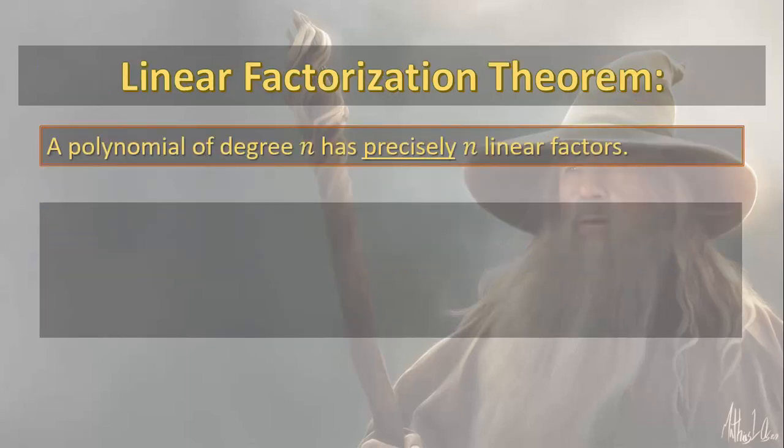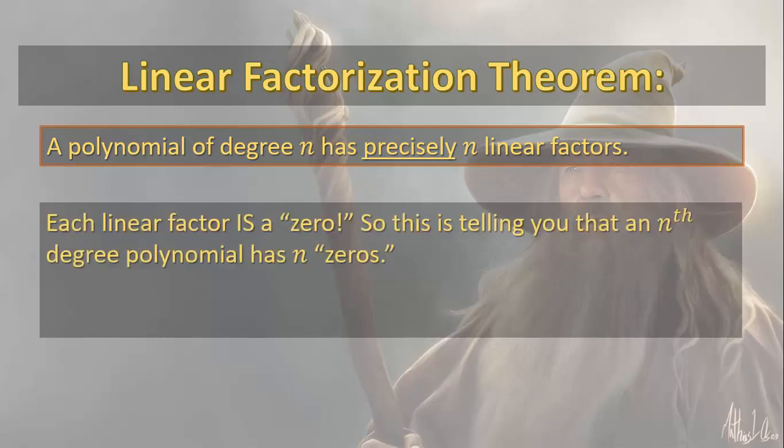In fact, a polynomial of degree n has precisely n linear factors. In other words, n complex zeros. So each linear factor is a zero. So this is telling you that an nth degree polynomial has n zeros.